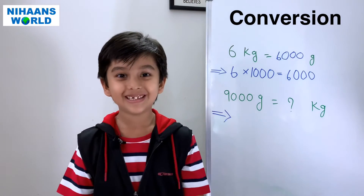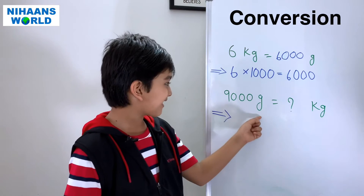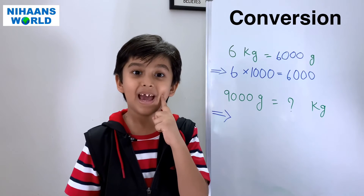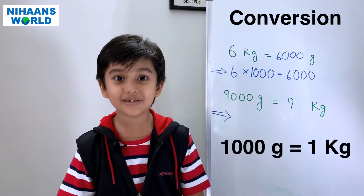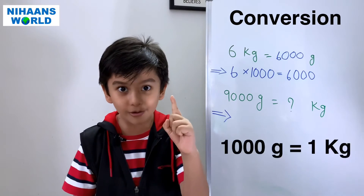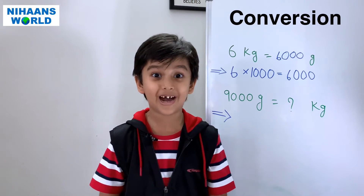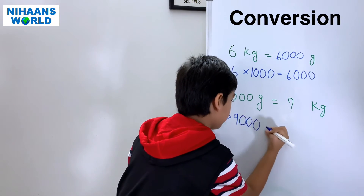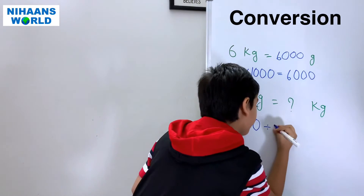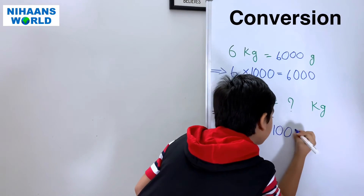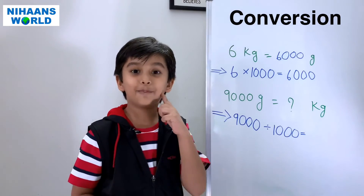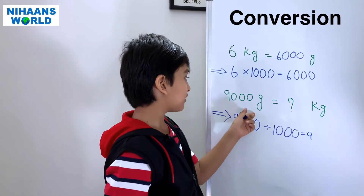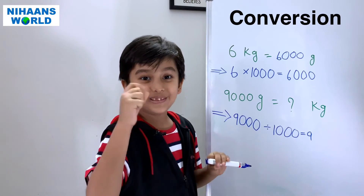Now let's solve the second example: 9000 grams is equal to how many kilograms? As we know, 1000 grams is equal to 1 kilogram. So we divide: 9000 divided by 1000 is equal to 9. Therefore, 9000 grams is equal to 9 kilograms.